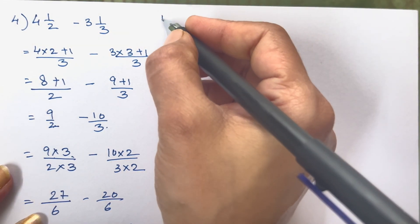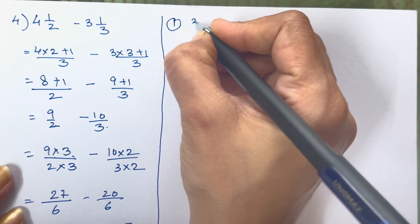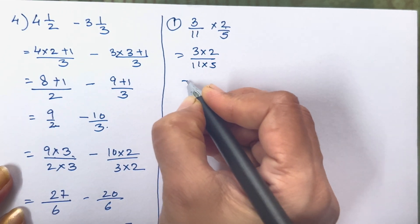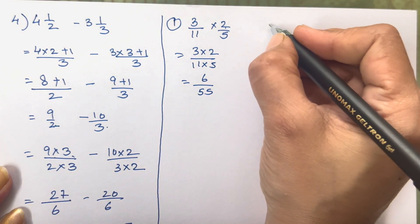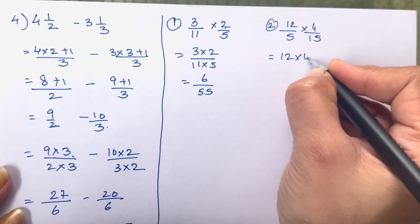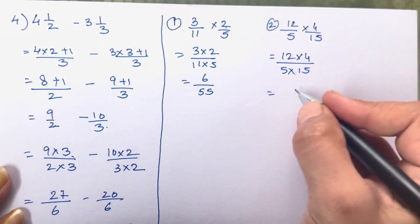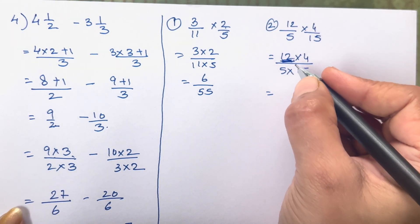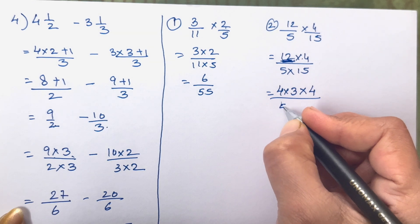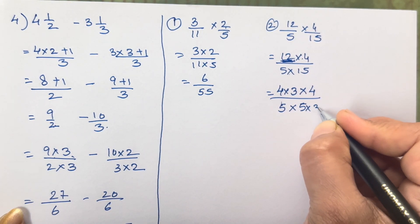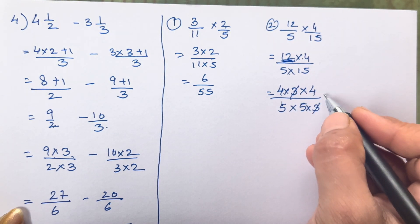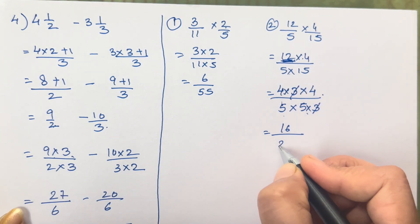Now we will move on to multiplication, which is extremely easy. 3 upon 11 × 2 upon 5: simply multiply numerators and denominators to get 6 upon 55. The second one is 12 upon 5 × 4 upon 15 = 12 × 4 over 5 × 15. We can simplify: write 12 as 4 × 3 and 15 as 5 × 3, then cancel common factors to get 16 upon 25.